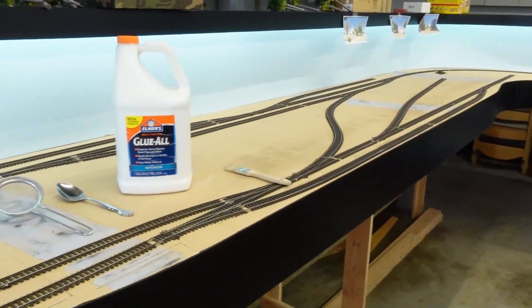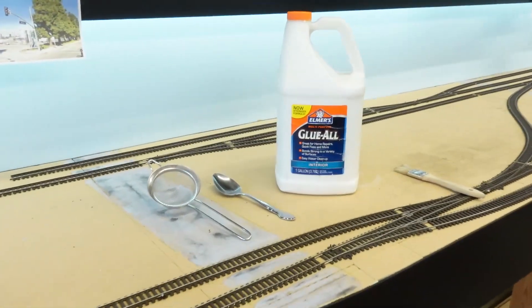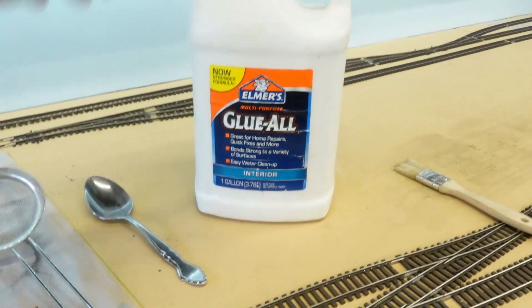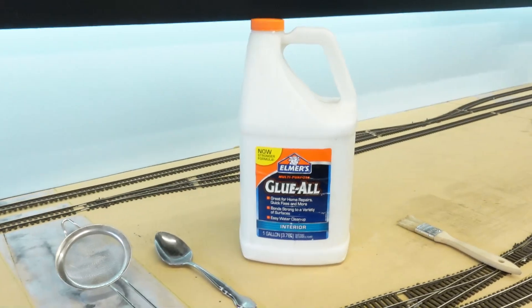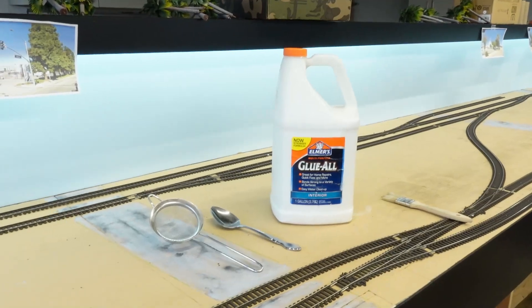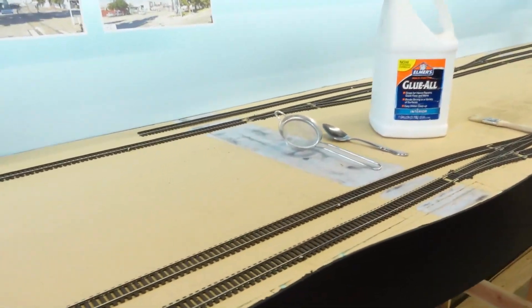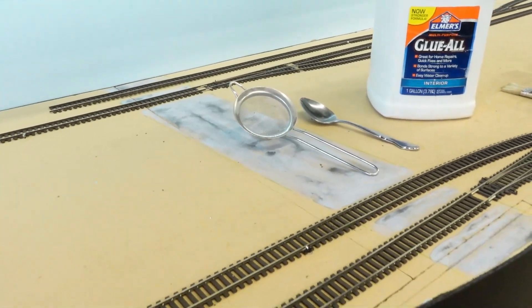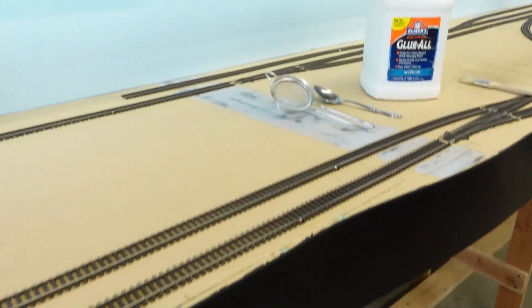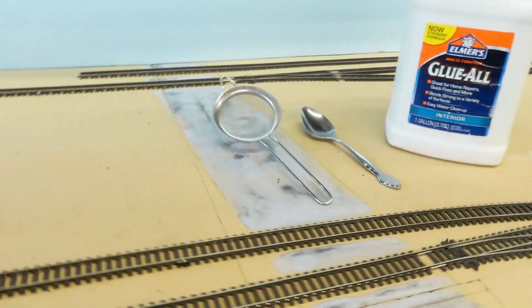Got everything off of the layout here and got all my glue ready to go. This is what I use, just your standard old Elmer's white glue. You can get a big jug of it instead of buying those little bottles for like eight dollars. Get a big jug for a couple bucks at Lowe's. Got my sifter, got a little spoon, got my dirt down here.